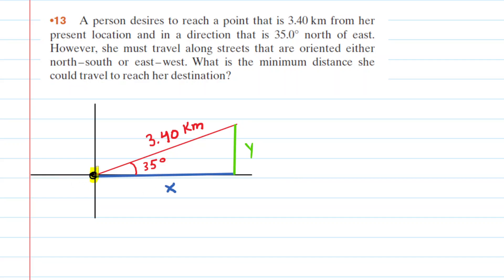In this question, a person starts from the origin and they wish to reach a destination at a distance of 3.4 kilometers and an angle of 35 degrees north of east.